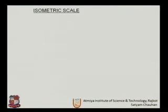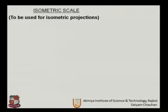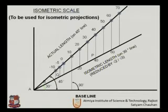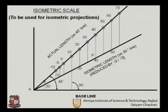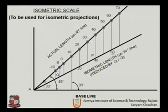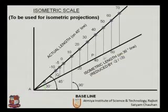Let us revise the isometric scale. The actual length is always drawn on the 45-degree line, and the isometric length uses a 30-degree angle. The isometric length is reduced by a factor of √2 divided by √3 compared to the actual length. So whatever length we get on the actual 45-degree line, the isometric length will be reduced accordingly.